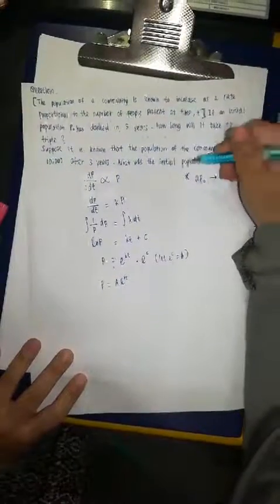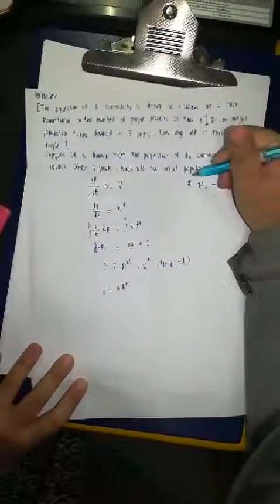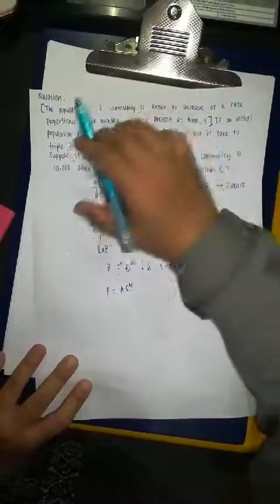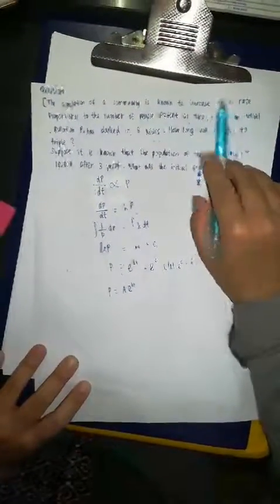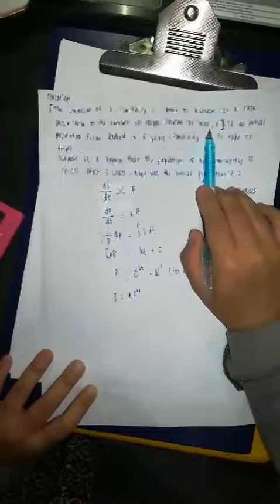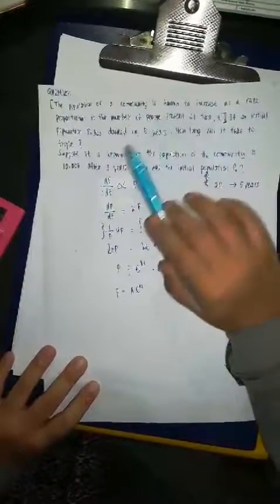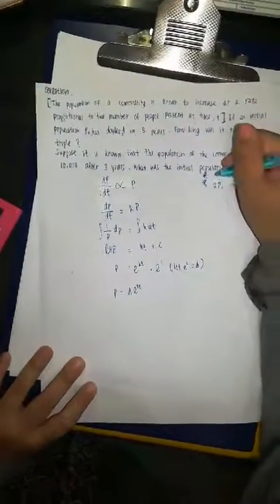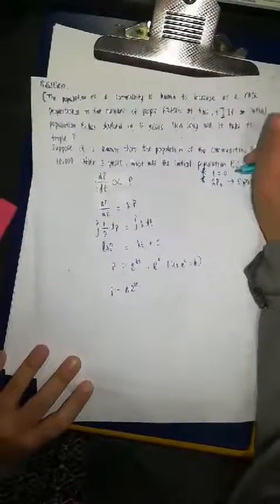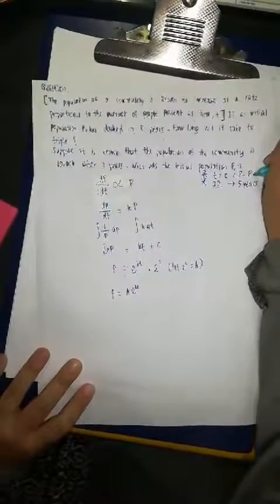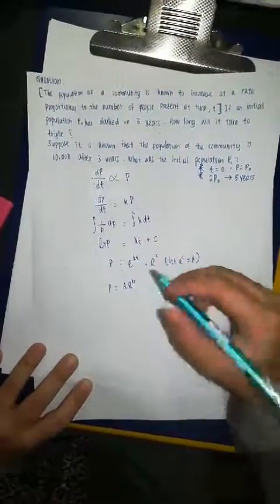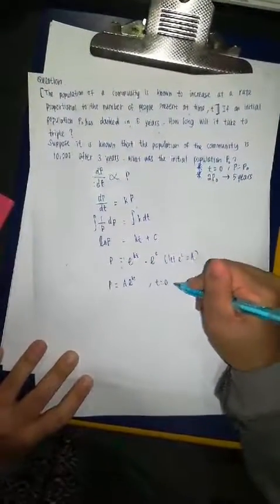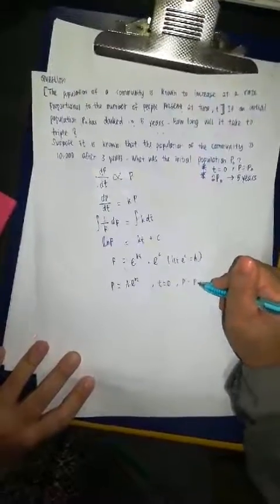So, before moving here, we have to refer to the first info. It is given time T equal to 0 initial and then P equal to P₀. So, we use this here. T equal to 0, P equal to P₀.